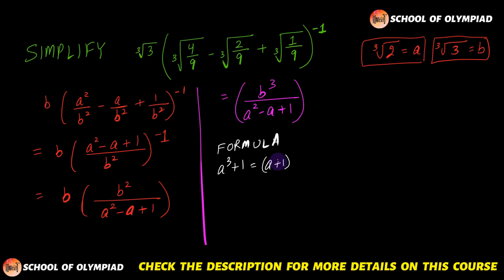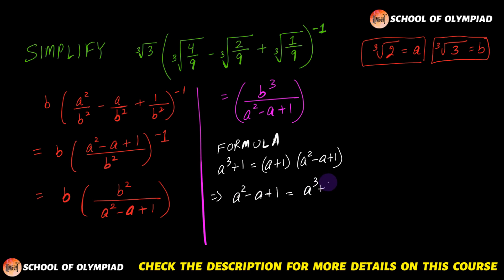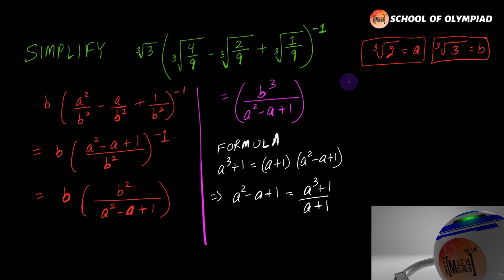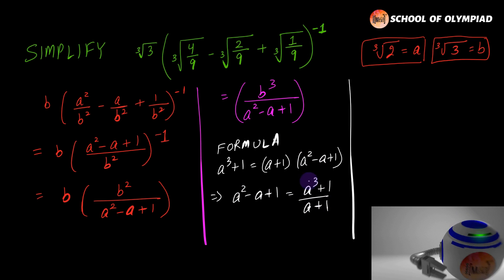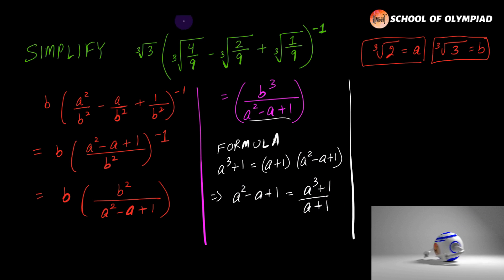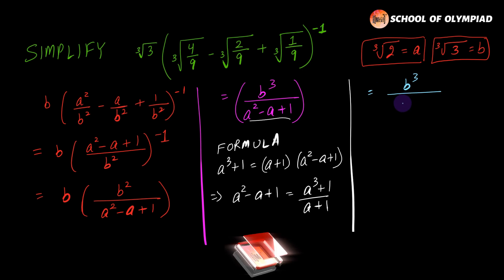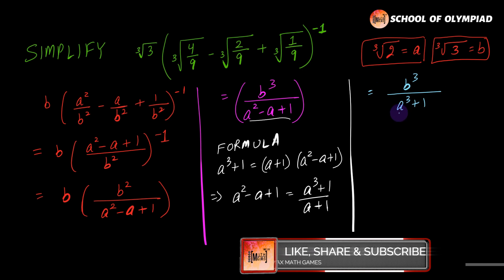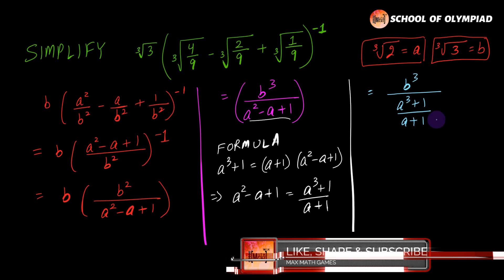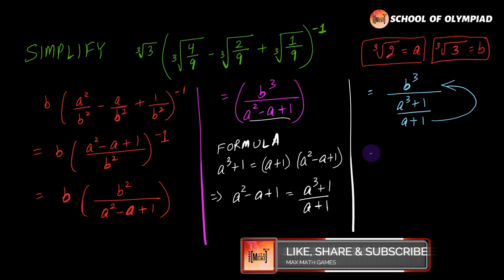The formula is: a³ + 1 equals (a + 1)(a² minus a + 1). Therefore a² minus a + 1 equals (a³ + 1)/(a + 1). We substitute this value into the denominator of our expression, so it becomes b³ divided by (a³ + 1)/(a + 1), which gives us b³ multiplied by (a + 1) divided by (a³ + 1).